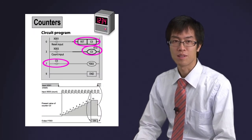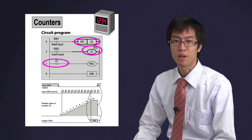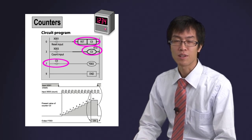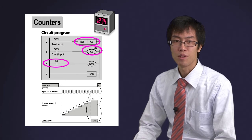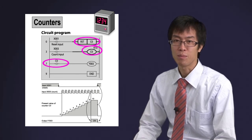Next is the counter. The counter is represented as C. A counter counts the number of times that the contact is driven. When the number in the counter reaches a preset number, the counter contact turns on.